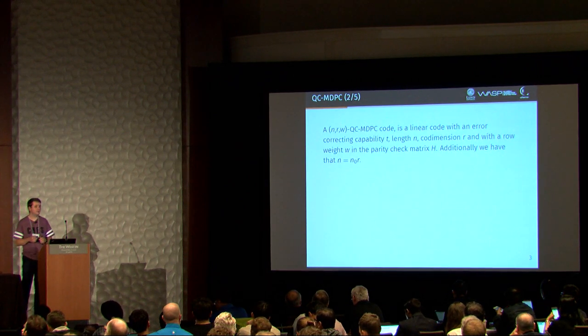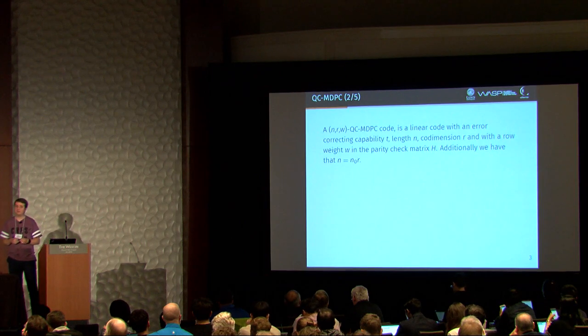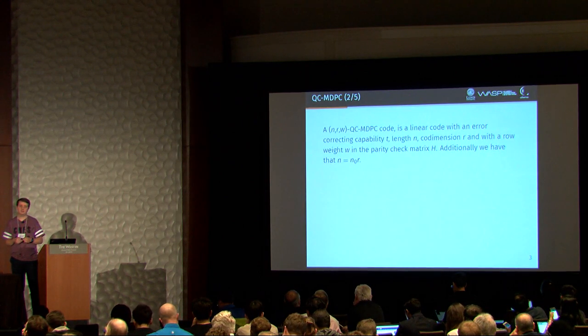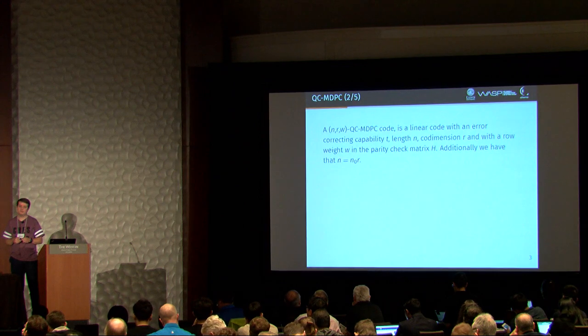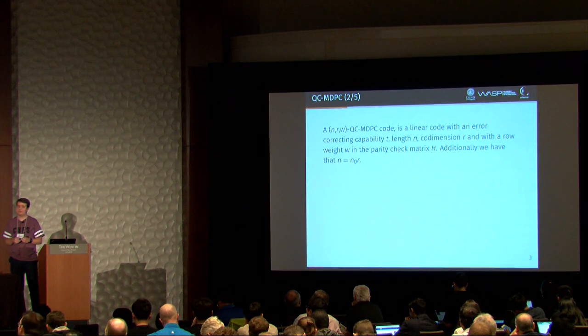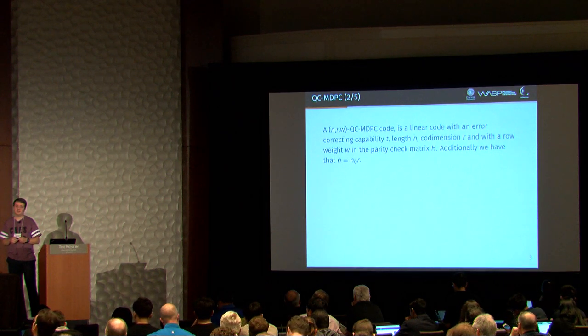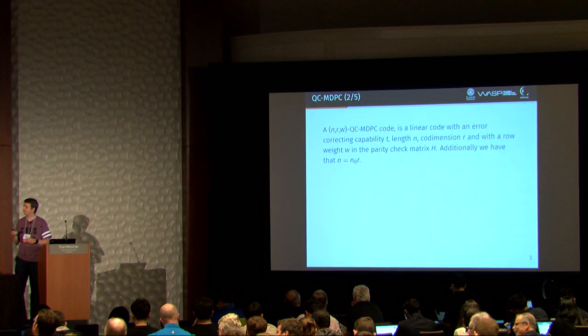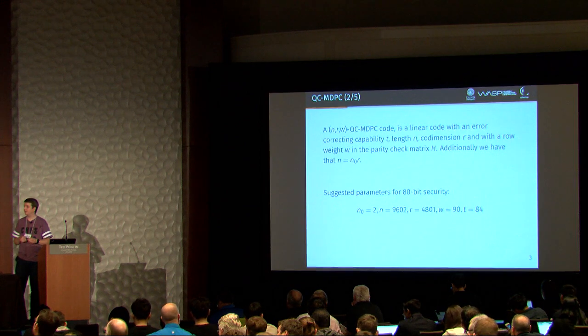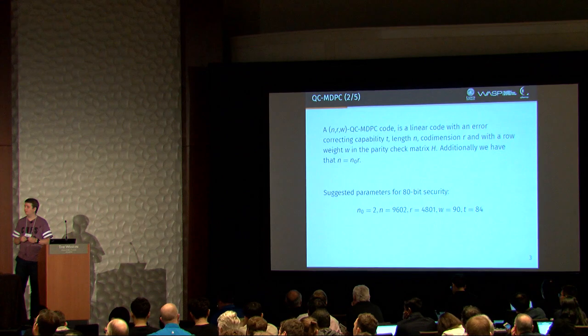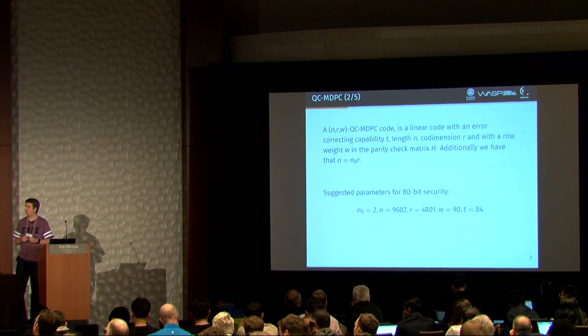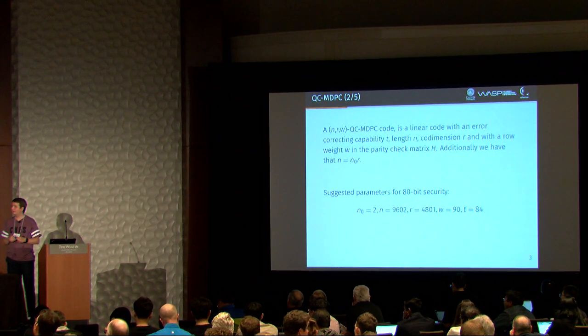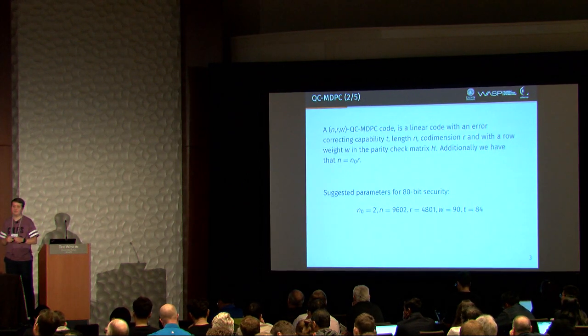An MDPC code is a linear code with an error correction capability T. We have a length N of the ciphertext, code dimension R, which is the length of the plaintext, and we have a row weight W in the parity check matrix H. Also, we have that the length of the ciphertext is a small constant times the length of the plaintext. So for 80-bit security, we have these parameters where the constant is 2. The ciphertext is 9,602 bits long, and we have length of the plaintext 4,801, a row weight of 90, and the error correction capability of 84.